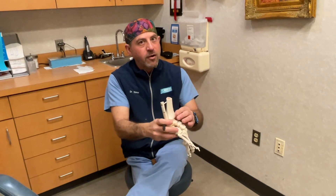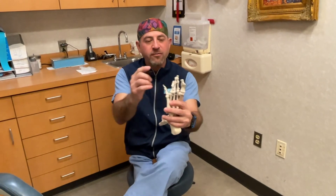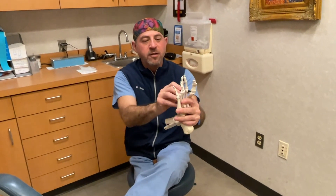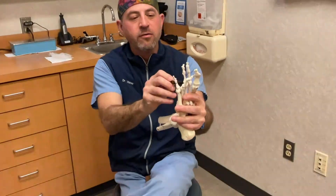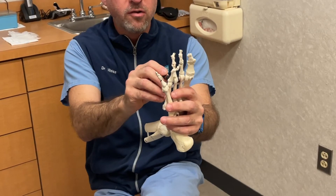There are a lot more. The other common ones we see are in the front of the foot, in between the toes or in between the metatarsals. And those are called os intermetatarsale.